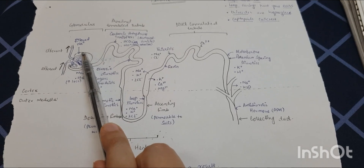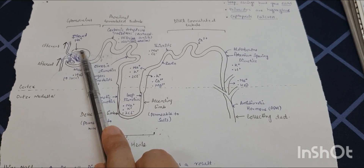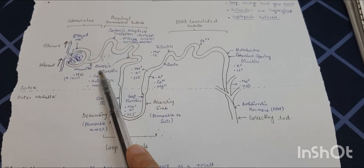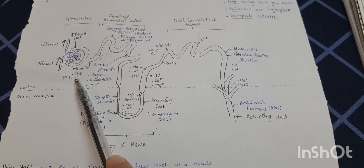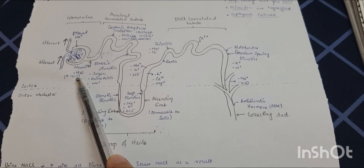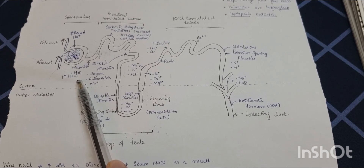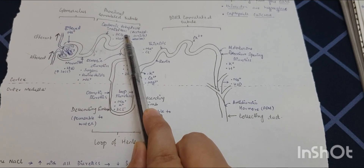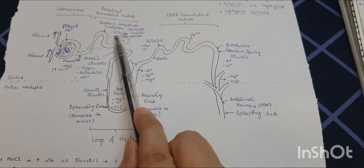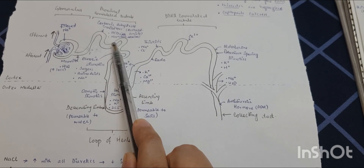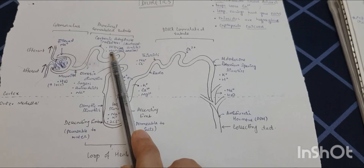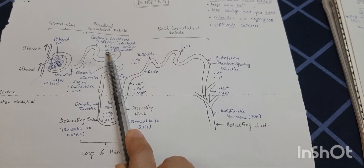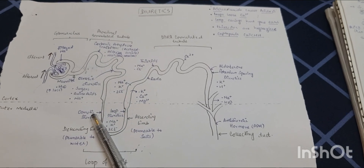Sodium is filtered from the Bowman's capsule directly. Mannitol acts on the proximal convoluted tubule, where it increases filtration of water, hence increasing fluid loss. The carbonic anhydrase inhibitors act on the proximal convoluted tubules, resulting in decreased reabsorption of bicarbonates and loss of sodium and water. Remember: wherever the salt — that is sodium — goes, water follows.